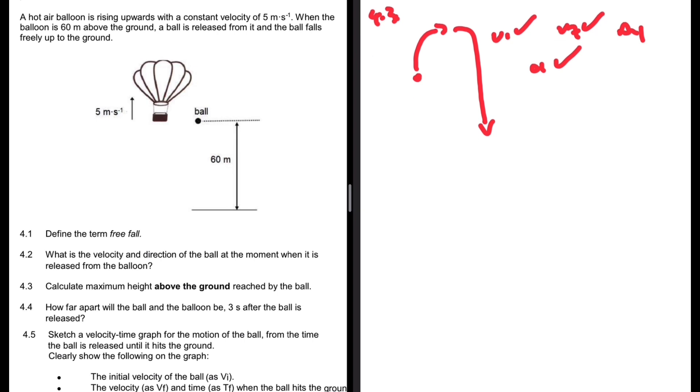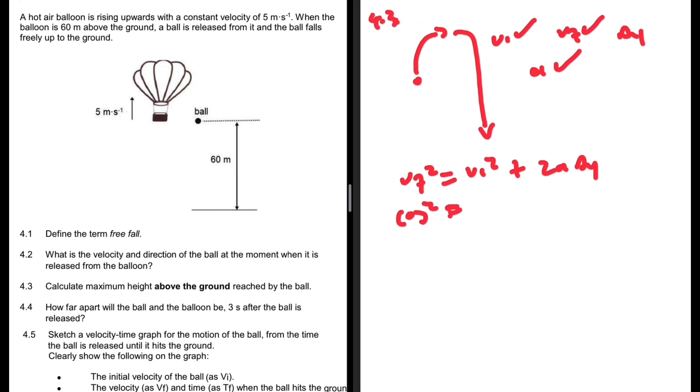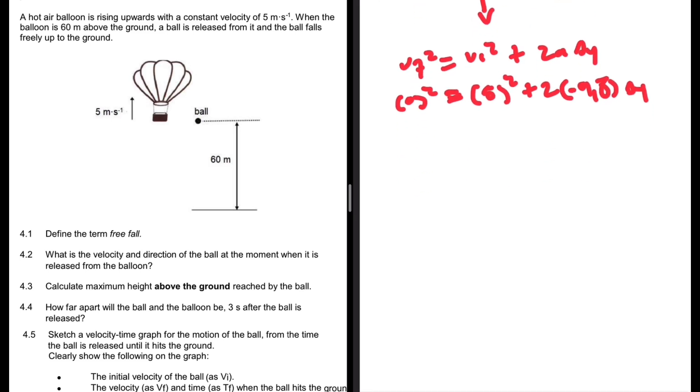We have the acceleration, so vf squared equals vi squared plus 2a delta y. Zero squared equals 5 squared plus 2 times negative 9.8 times delta y. Delta y equals negative 25 divided by negative 19.6, which equals 1.28 meters.